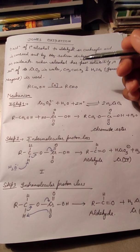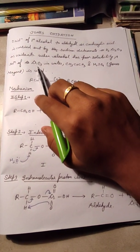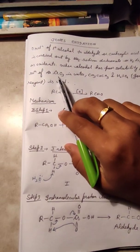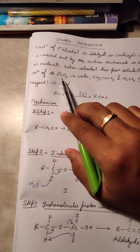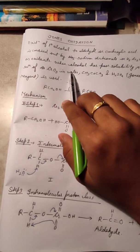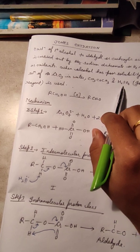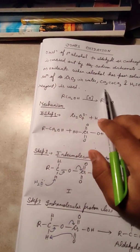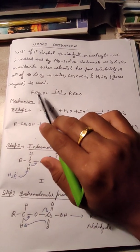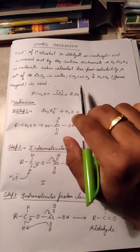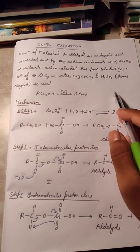in that case we have to use a solution of chromic anhydride in water, acetone, and sulfuric acid. This three-component combination is known as Jones reagent. The alcohol is first oxidized to aldehyde and then further oxidized to carboxylic acid.